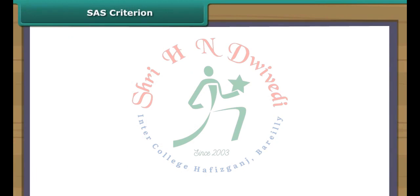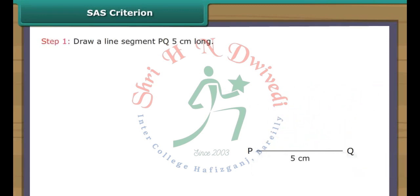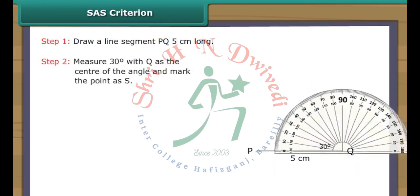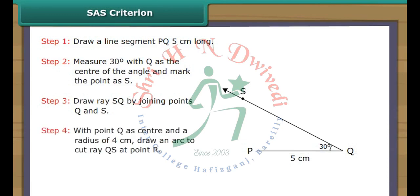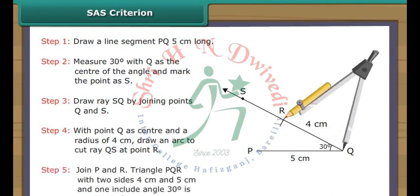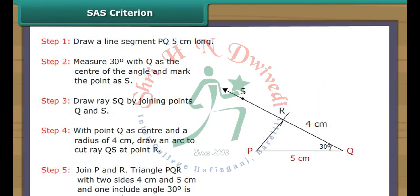SAS Criterion. Let us now draw a triangle whose two sides measure 4 cm and 5 cm and the included angle measures 30 degrees. Draw a line segment PQ 5 cm long. Measure 30 degrees with Q as the center of the angle and mark the point as S. Draw ray QS by joining points Q and S. With point Q as center and a radius of 4 cm, draw an arc to cut ray QS at point R. Join P and R. Triangle PQR with two sides 4 cm and 5 cm and one included angle 30 degrees is constructed.